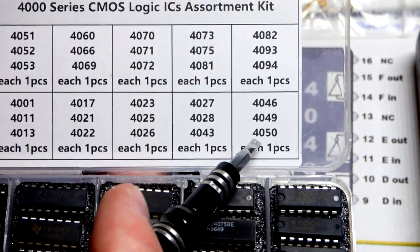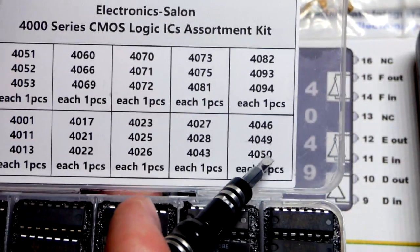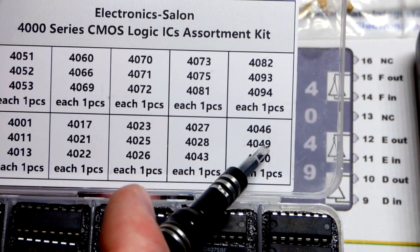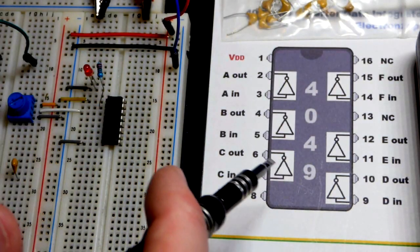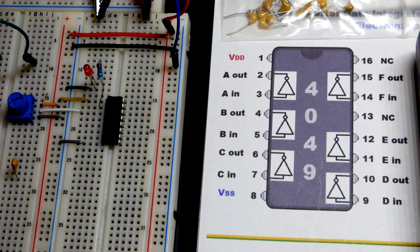There's the one there. And this is a non-inverting buffer integrated circuit. Right above there, the 4049, right here, is an inverting integrated circuit.